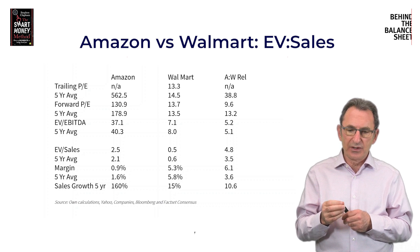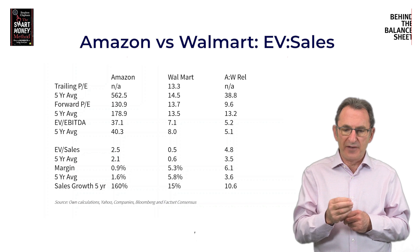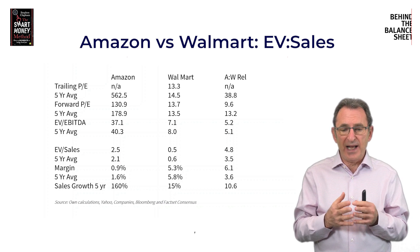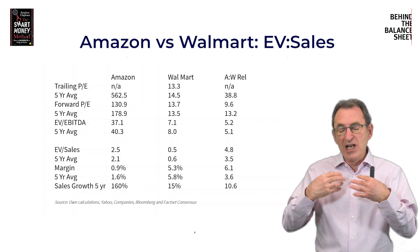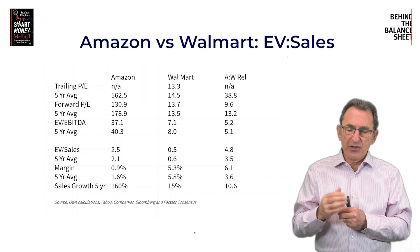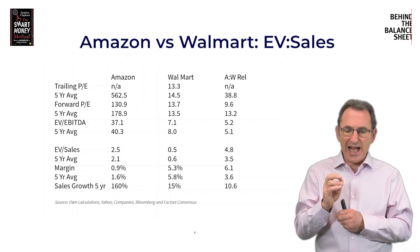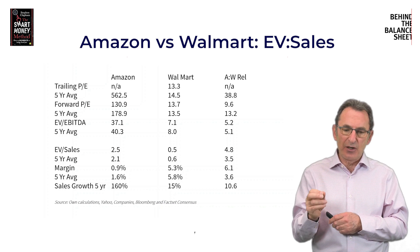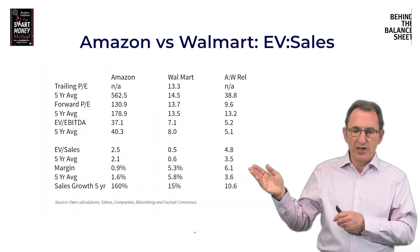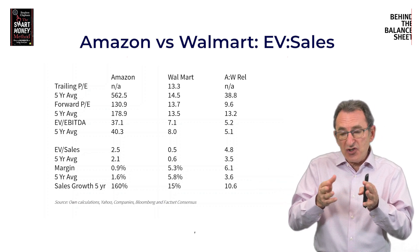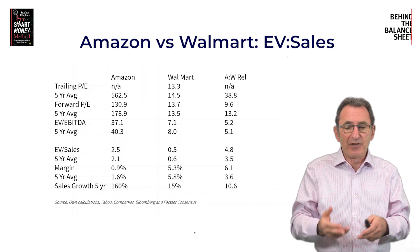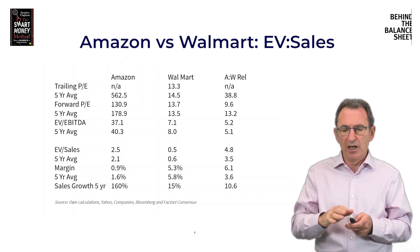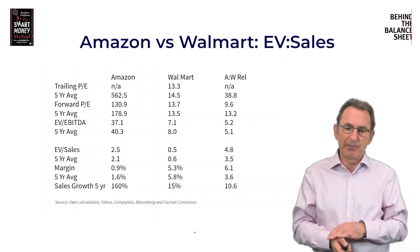When you looked at it on EV to sales, Amazon was at 2.5 times and Walmart was at 0.5 times — a ratio of 4.8 times. Amazon's margin wasn't very good back then — only 0.9% — before AWS really started to kick in. But Amazon's five-year sales growth was 160% versus Walmart's 15%, ten times the sales growth. Projecting forward, you could see that Amazon's EV to sales would shrink right down, and that was a big trigger for me, combined with an inflection in the gross margin, in getting very enthusiastic about Amazon on a valuation basis.